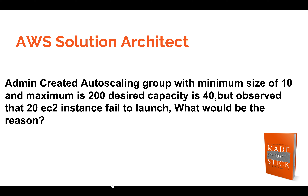The admin creates an auto scaling group with a minimum size of 10 and a maximum size of 200. The desired capacity is 40, but it is observed that 20 EC2 instances failed to launch. What would be the reason?